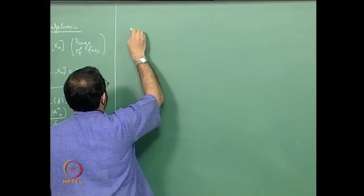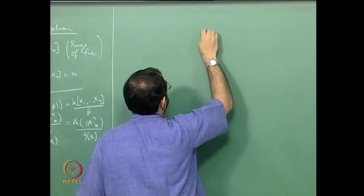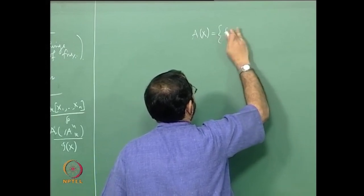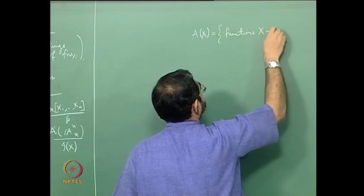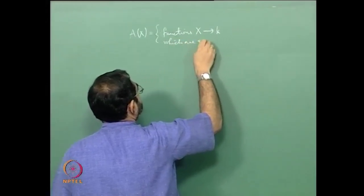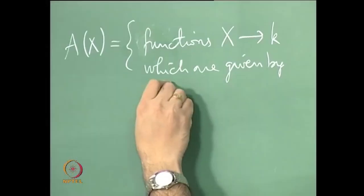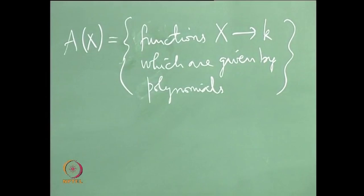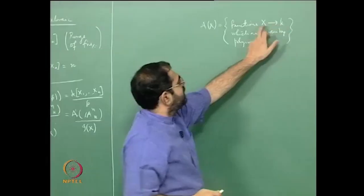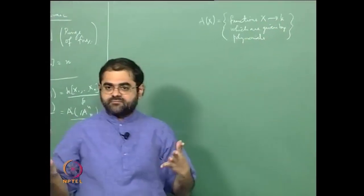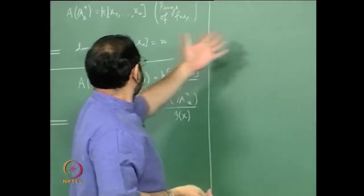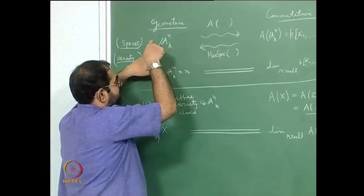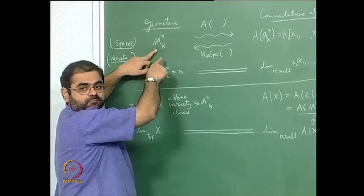Previously we were associating to X the ideal I(X), which is a prime ideal. Now instead of associating X to the prime ideal, we associate it to the quotient by that prime ideal — instead of looking at the ideal on the algebraic side, we look at the quotient by those ideals. The advantage of looking at quotients by those ideals is that you get rings of functions, and that is what I am trying to explain. You define A(X) to be functions from X to k which are given by restrictions of polynomials.